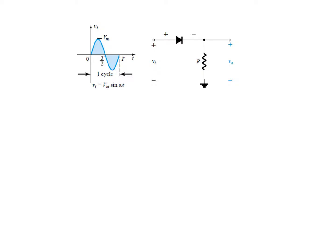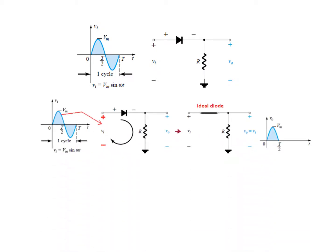Let us take the first case where we are applying the input voltage as a sinusoidal signal. The signal has a maximum amplitude of Vm or peak voltage. Because it is sinusoidal, we can write Vi = Vm sin(ωt). In the first positive half cycle, there is a positive terminal here and negative here. Because of this, current will flow from the positive terminal through the circuit. If we assume this to be an ideal diode — a short circuit — all this voltage will appear across the output. So whatever was in the first half cycle, the same will appear at the output.